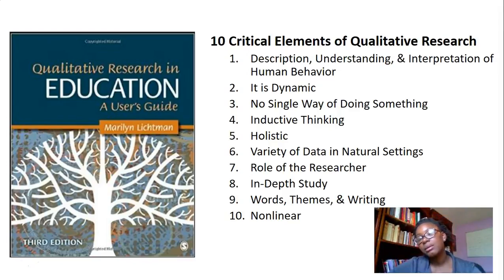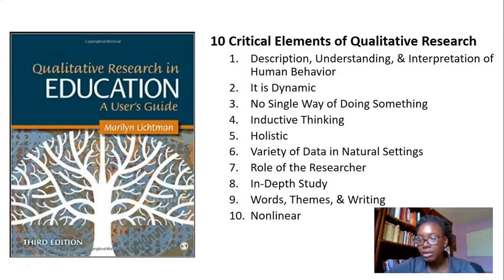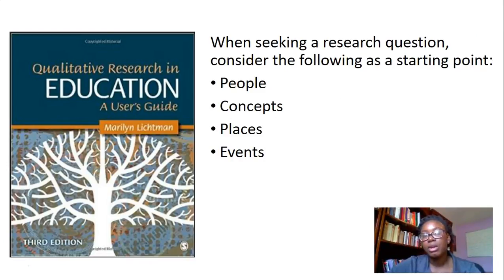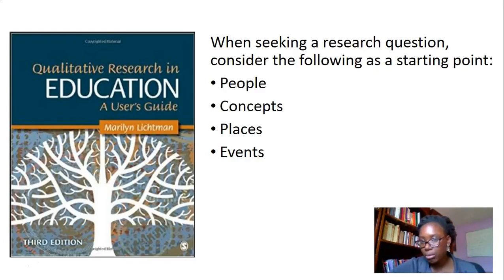It's non-linear in that you go back and forth between processes — you may collect data and figure out that you need to change your research question, so you can go back and forth within the qualitative method. When seeking a research question, the book helps us find a starting point. The starting points the book talks about are people, concepts, places, and events.